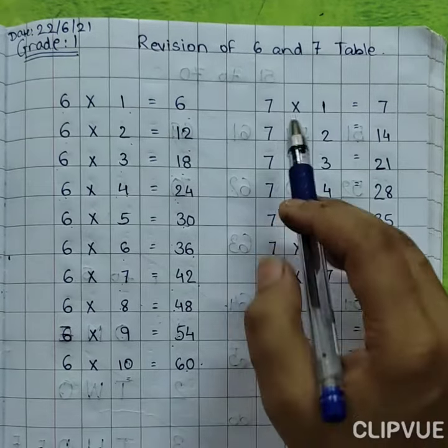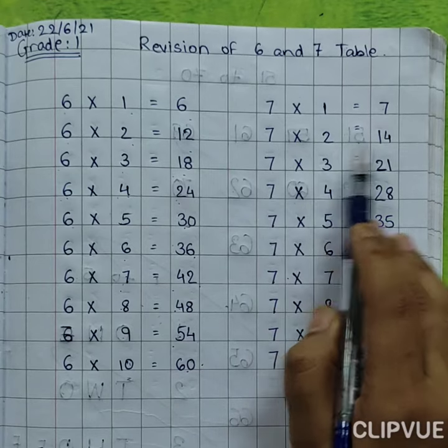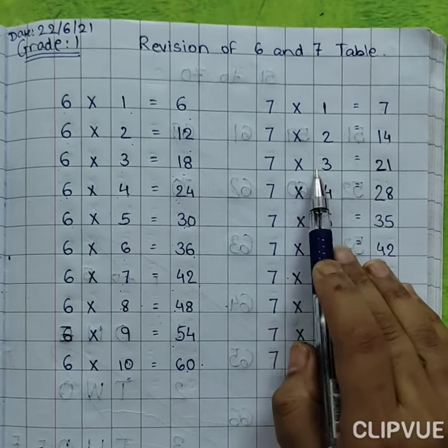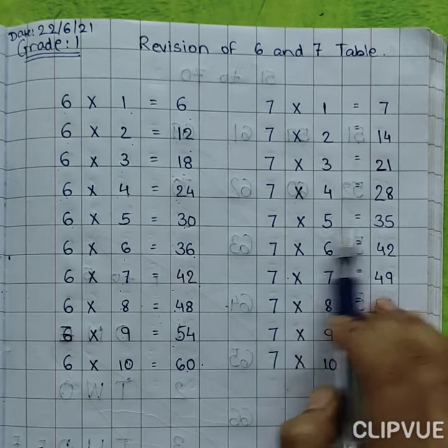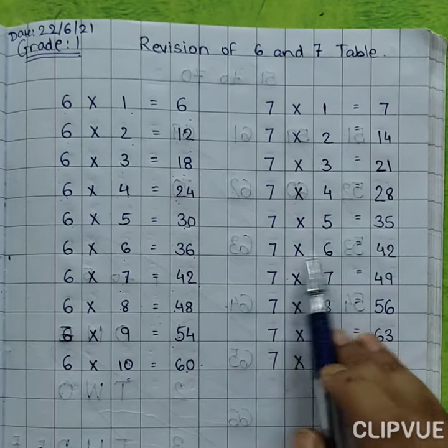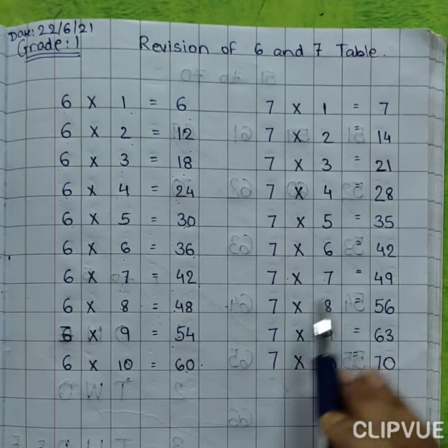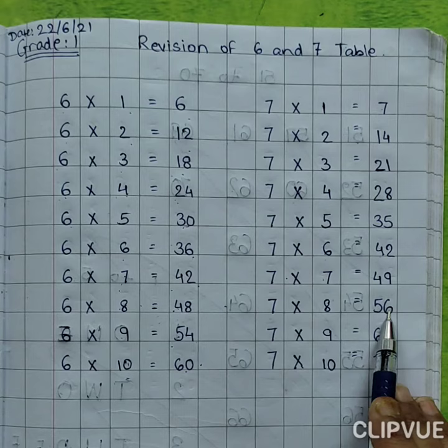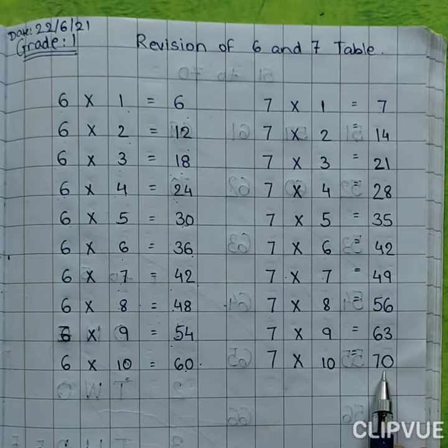Okay, now another table, 7. 7 1s are 7, 7 2s are 14, 7 3s are 21, 7 4s are 28, 7 5s are 35, 7 6s are 42, 7 7s are 49, 7 8s are 56, 7 9s are 63, 7 10s are 70.